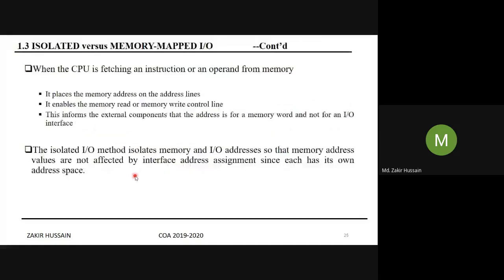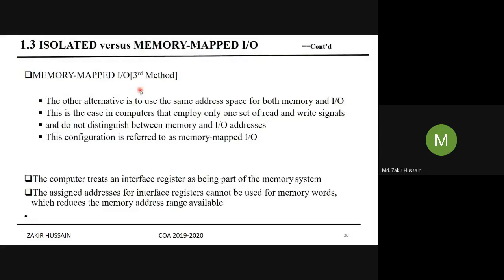We covered isolated I/O yesterday. Today let us take up memory-mapped I/O. In memory-mapped I/O — the third method — we use one common bus for memory and I/O with common control lines. If anyone has doubts, you can unmute yourself and ask.